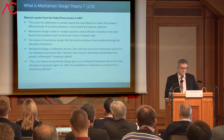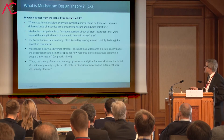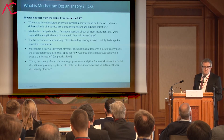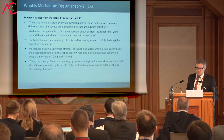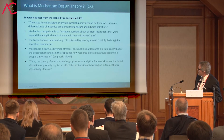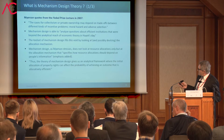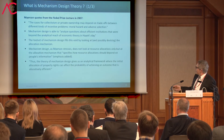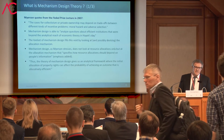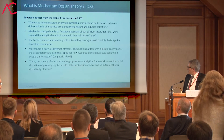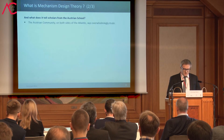I'll start with a few quotes to set the scene. They talk about incentive products — I'll discuss what incentives actually means — and what they've been saying about Hayek. These are mostly quotes from the Nobel Prize speech: to analyze questions about efficient institutions that were beyond the analytical reach of economic theory of Hayek's day. What they're saying is that Hayek couldn't do things they can do. With that tool set, they are filling a void. Maskin is saying: now we have the tool set not only to look at resource allocations, but we can talk about institutions and incentive compatibility.